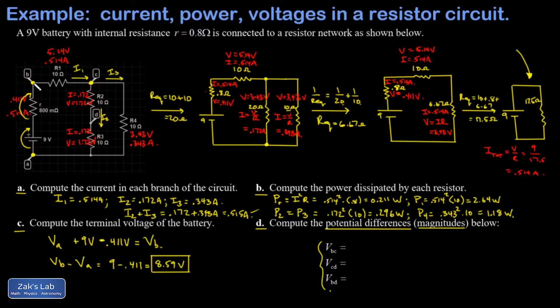So VBC is the potential difference between node B and node C. And all that's in there is a single resistor. And I know the potential difference over that resistor. It was 5.14 volts. So it's that simple. And then VCD, again, all that's in there is a single resistor R2. And the potential drop across that was 1.72 volts. And how about VBD? So the potential difference between node B and node D. Well, I'm going to step down by 5.24 volts and then another 1.72 volts. So my total drop is going to be 5.14 volts plus 1.72 volts.